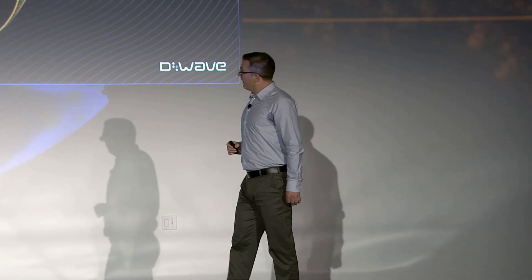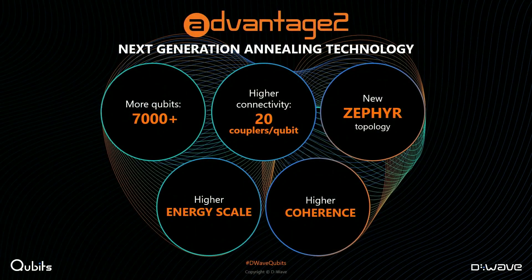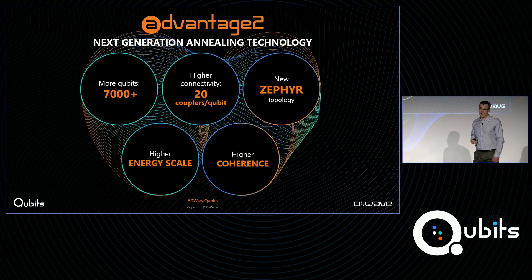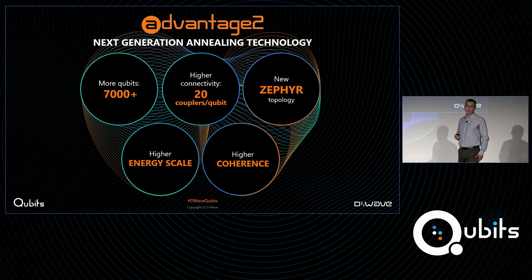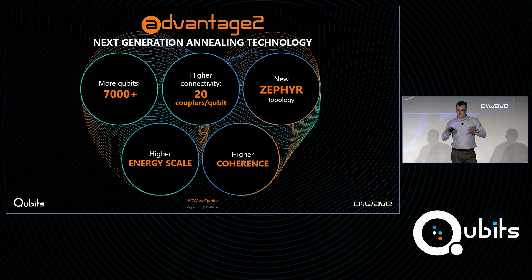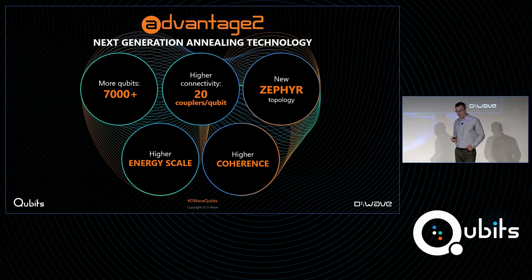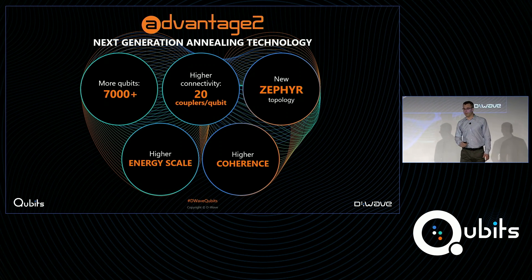The Advantage 2 system will see improvements on all key metrics over our current generation Advantage system. That includes the number of qubits — it will have more than 7,000, up from 5,000. It will have higher connectivity: every qubit will be directly connected in a programmable way to 20 other qubits, up from 15. Those qubits will be arranged in the Zephyr topology, which is very important in determining the complexity of problems we can solve, and it will allow us to solve more complex problems than ever before.